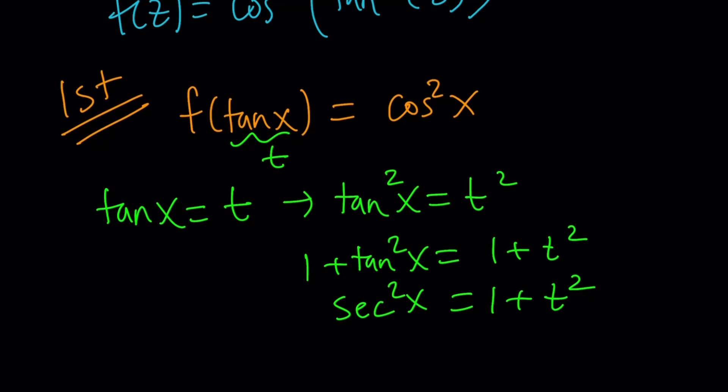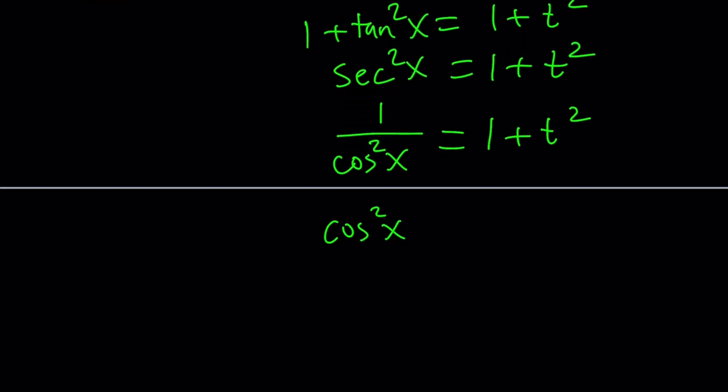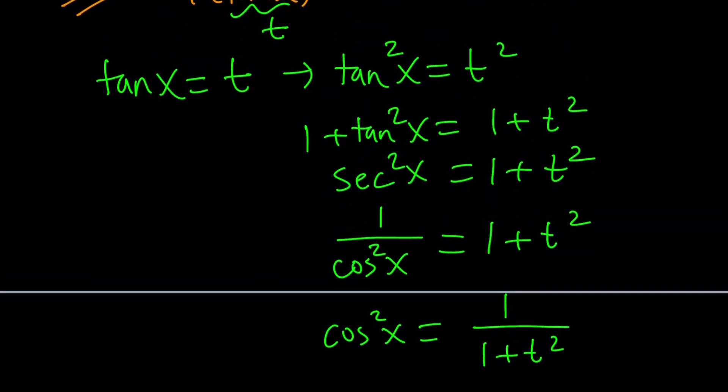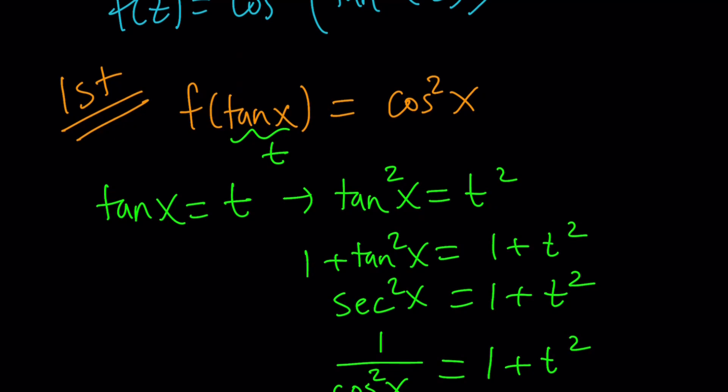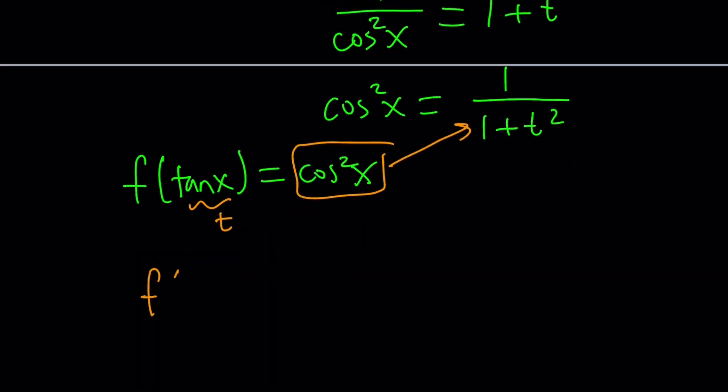And secant squared is the reciprocal of cosine squared. Secant and cosine are reciprocals. So, cosine squared would be, in other words, secant squared can be written as 1 over cosine squared. And then by switching this around, we can write cosine squared as 1 over 1 plus t squared. But that was the right-hand side of my equation.